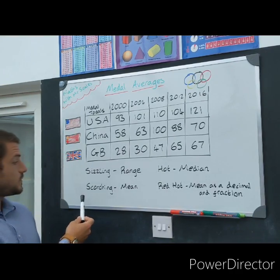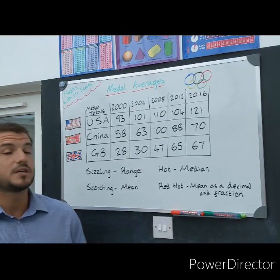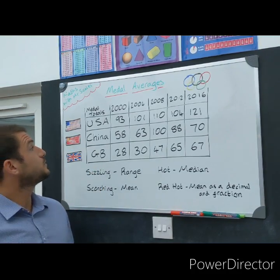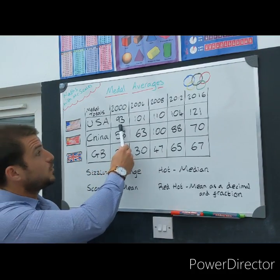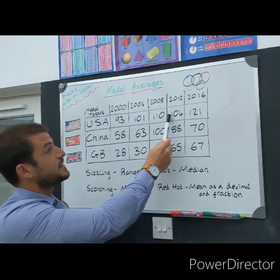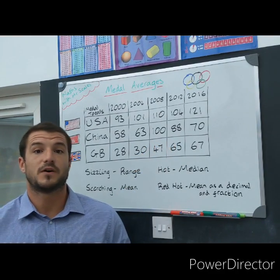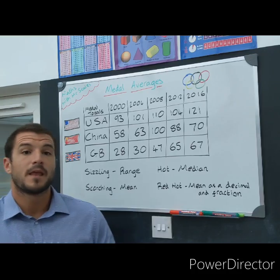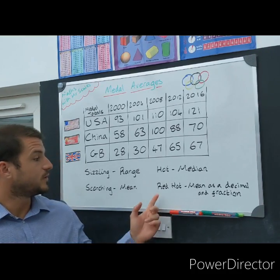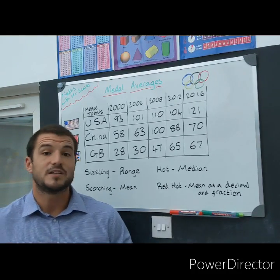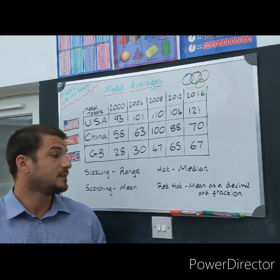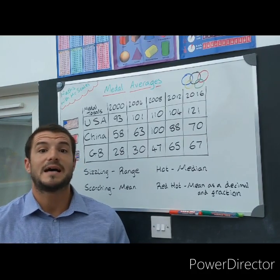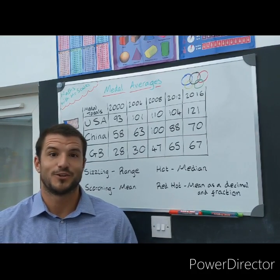For those of you that want to really challenge yourselves with the scorching challenge, you're going to be working out the mean. You'd work out the mean totals for the USA — add all five of these numbers up together and then divide by five. You would do the same for China and GB. And if you're really feeling confident, our red hot challenge is working out the mean but giving me that number as a decimal and as a fraction. Good luck.